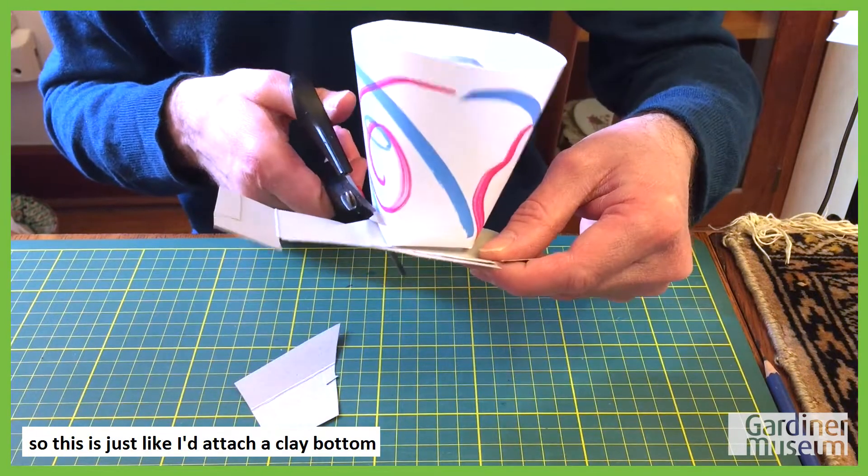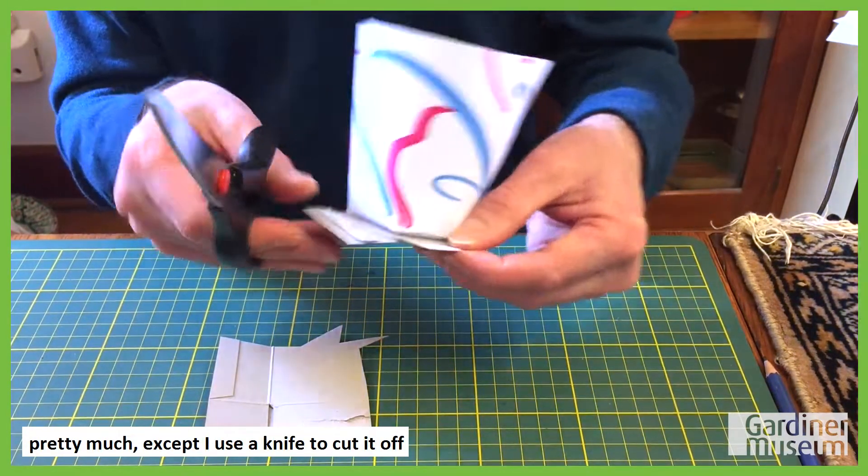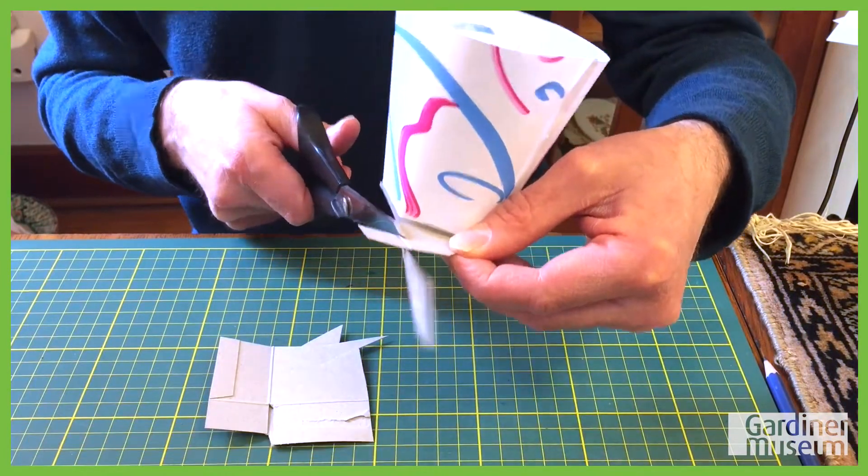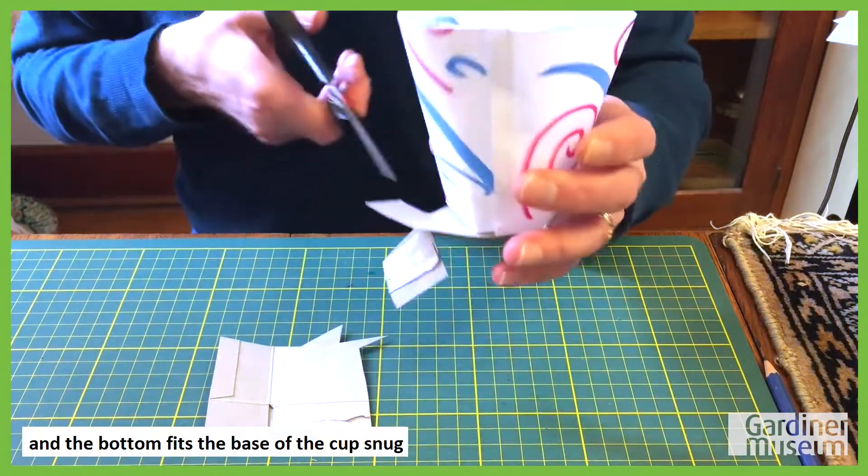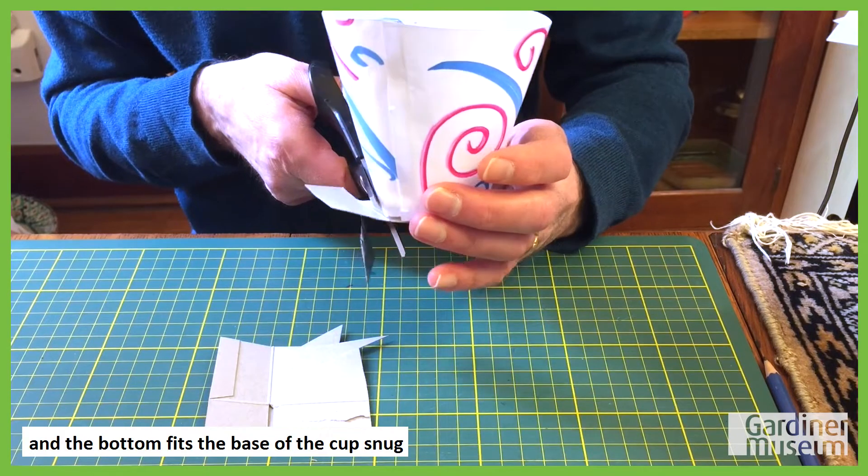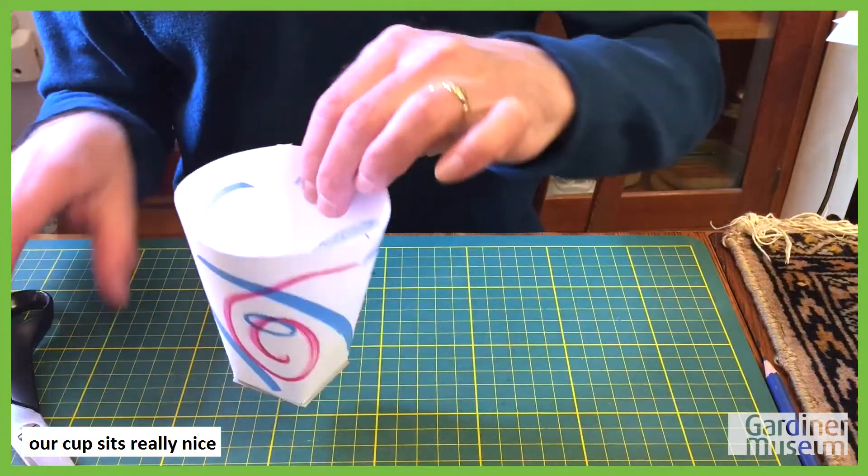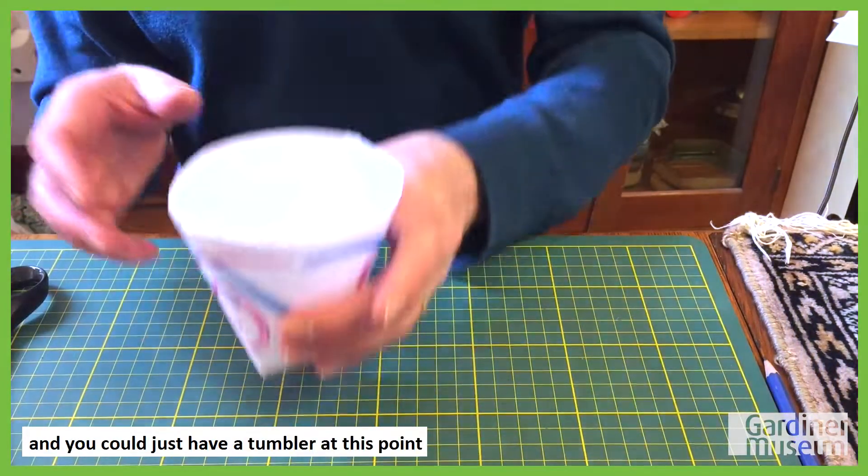So this is just like attaching a clay bottom pretty much, except I use a knife to cut it off. And the bottom fits the base of the cup snug. Our cup sits really nice, and you could just have a tumbler at this point.